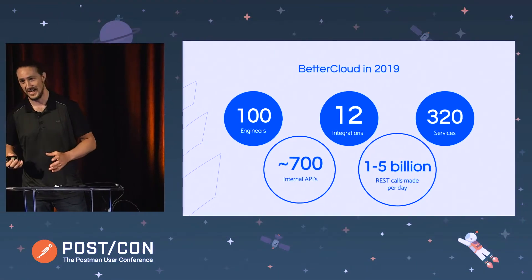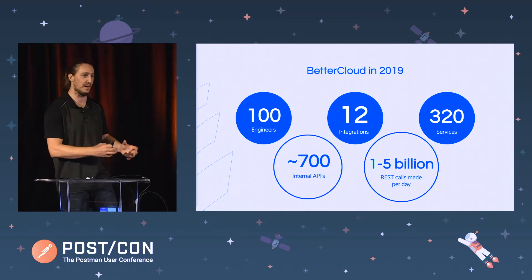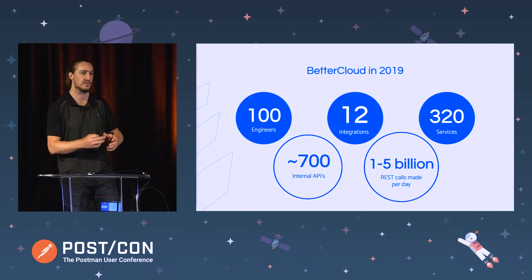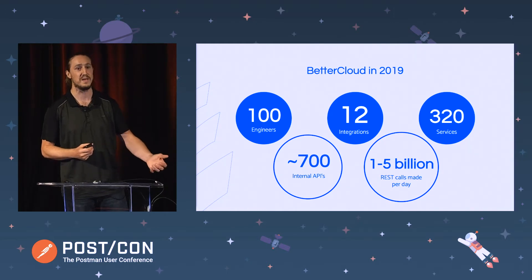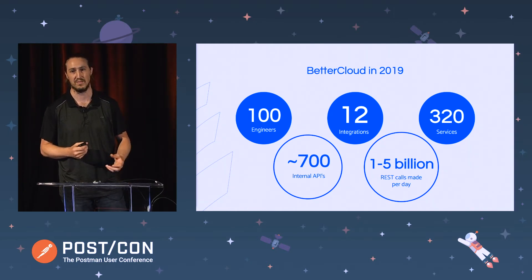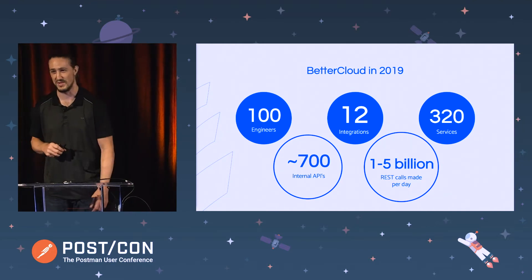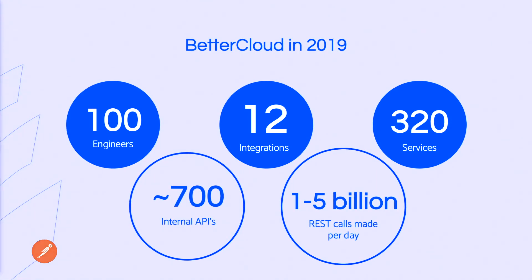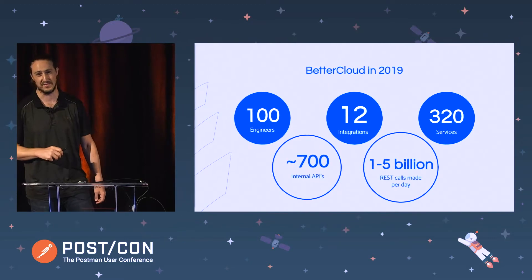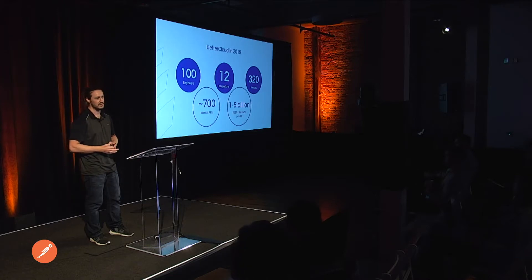What does that actually look like in real life? To give you some perspective — for Postman to be useful to you, whether as a collaboration tool or an automated testing tool, you don't have to be an IBM or an Atlassian, and you don't need an engineering department of 100. A team of five could benefit. The big number I want to call out is we make about 1 to 5 billion REST API calls per day. In one day there's about 86,400 seconds, so 1 billion REST API calls per day is about 12,500 per second. At BetterCloud, we do somewhere between 10 and 50 REST API calls per millisecond.